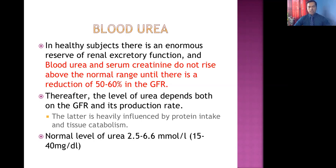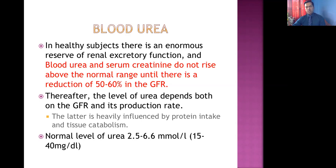If our kidneys are damaged around 30 to 40 percent, blood urea and serum creatinine are still within normal limits. So if a patient comes to the hospital and blood urea and serum creatinine are high, that means the kidneys are already seriously damaged. The normal level of urea is 15 to 40 milligram per deciliter, or 2.5 to 6.6 millimole per liter — remember the value in milligram per deciliter.